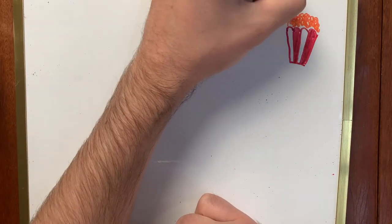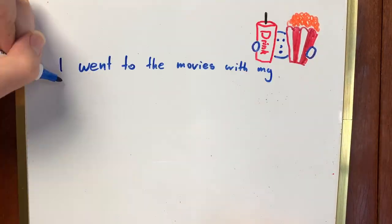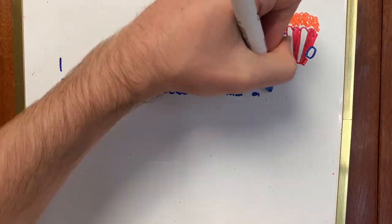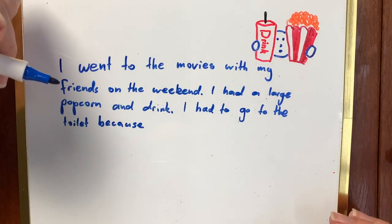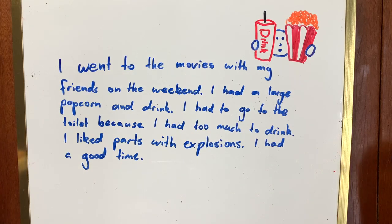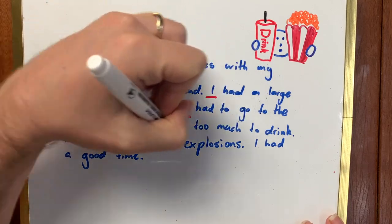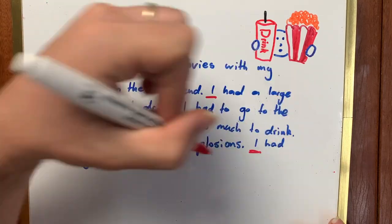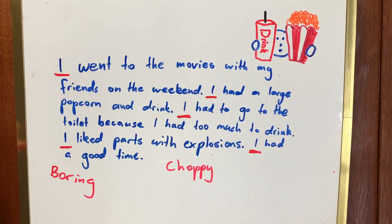Let's take a passage from a recount. 'I went to the movies with my friends on the weekend. I had a large popcorn and drink. I had to go to the toilet because I had too much to drink. I liked the parts with explosions. I had a good time.' Look at how each sentence starts with the same word — I. Oh, that's a bit boring. It's choppy. It doesn't flow well. Some of the sentences even finish with the same words.